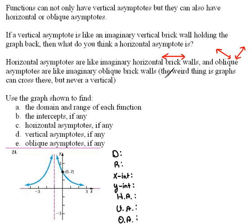Now, the weird thing about horizontals and obliques is that the graph can actually cross over those. A vertical brick wall, or a vertical asymptote rather, I should say, is a very sturdy brick wall. The graph will not ever cross over those. But a horizontal and an oblique asymptote are kind of more spongy. The graph can actually sneak through them, but only on horizontals and obliques.